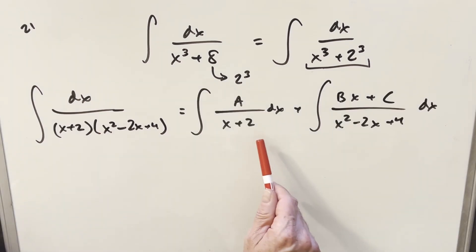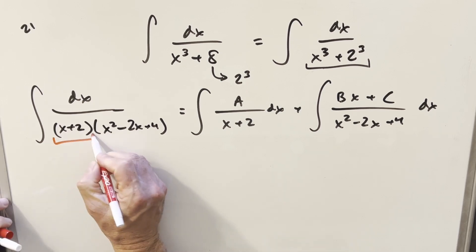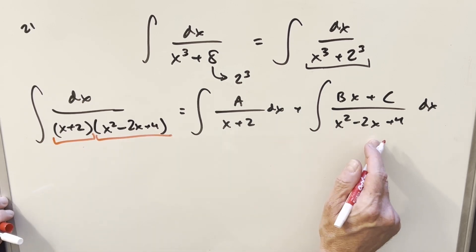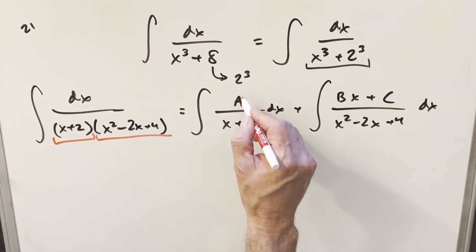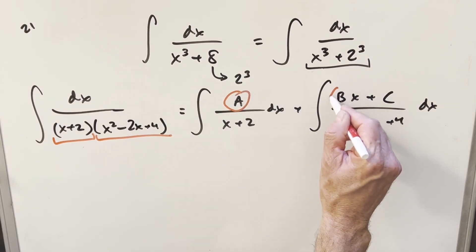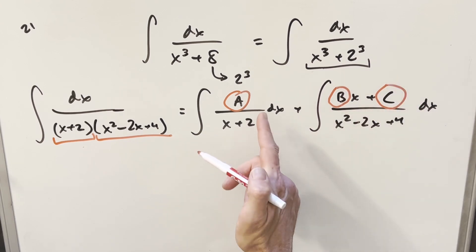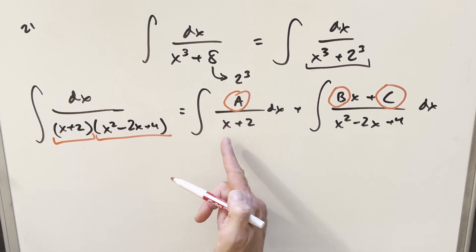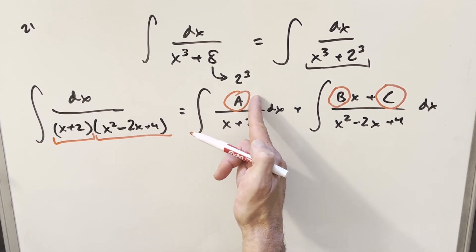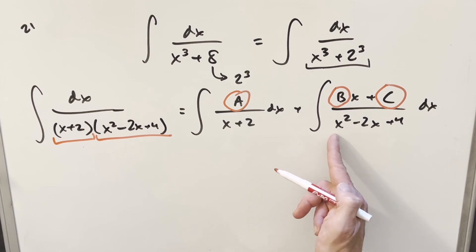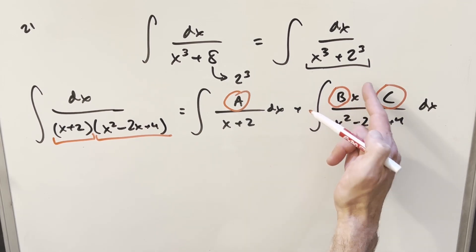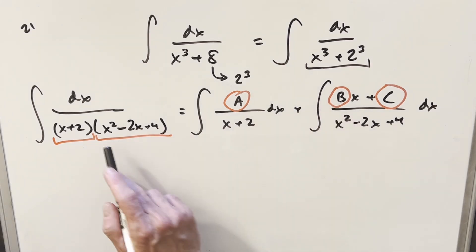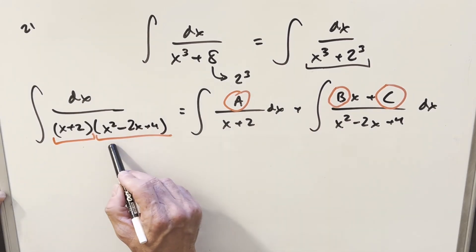I've rewritten this and set it up for partial fractions, splitting up our denominator. Here's our x plus 2 and our x squared minus 2x plus 4. We set up the numerator with variable values A, B, and C to find. Notice the numerator is one degree less than the denominator: this is first degree so we have a constant A; this is second degree so we have a first-degree numerator, Bx plus C. To solve for A, B, and C, we pretend we're putting it back together into one fraction.